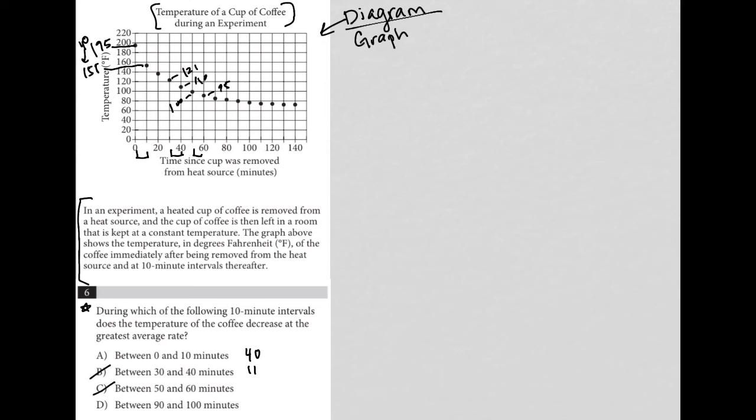And we could have known that from the beginning, right? And I'll just show you, choice D is between 90 and 100. I mean, these points are pretty much equivalent. There's not much of a decrease there. So that's why D is gone.